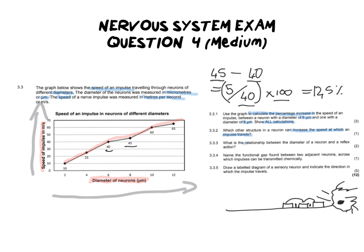For the next question it says what is the relationship between the diameter of the neuron and the reflex action? The relationship means what is the relationship between the two variables, between the diameter of the neuron and the speed at which the impulse travels? And in this case we already spoke about it. We said that as the diameter of the neuron increases the speed of the impulse or the speed of the reflex is going to increase.